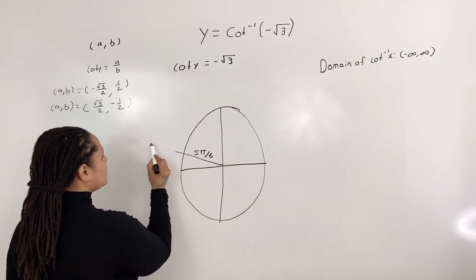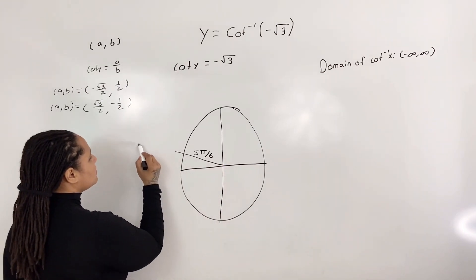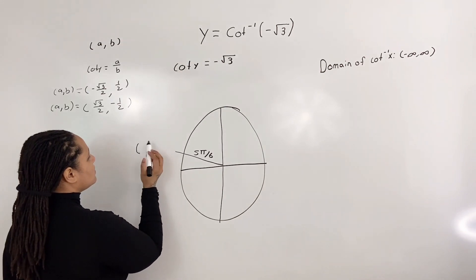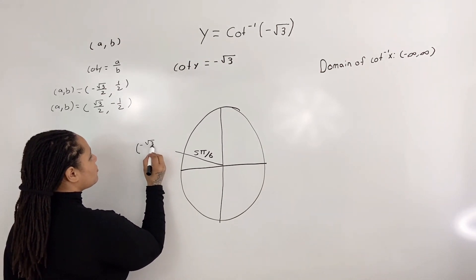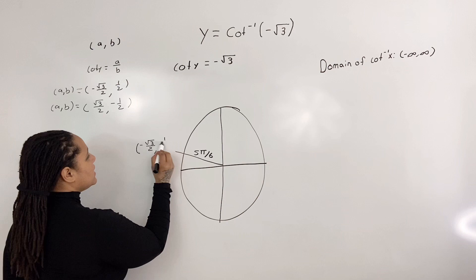And our coordinates are negative root 3 over 2, 1 half.